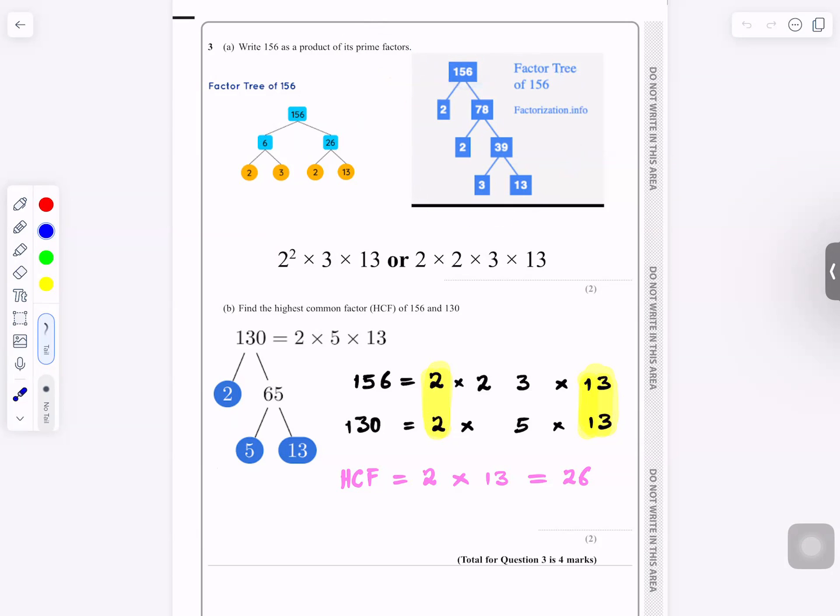156 is an even number, so you divide by 2. You get 78. You divide by 2. And then now you get 39. You divide by 3. So it will be 2 times 2 times 3 times 13. That gives you the 2 marks.